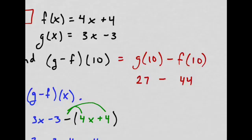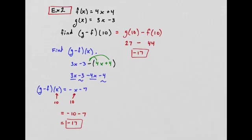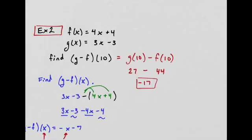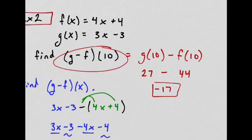27 minus 44 is still negative 17. So that's another way to do it. Whichever one you're more comfortable with. I feel like when you have, when you're evaluating stuff, it's easier to plug it in first and then go from there. But sometimes it's not.